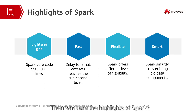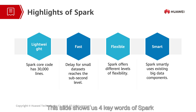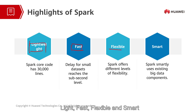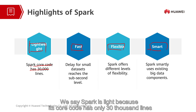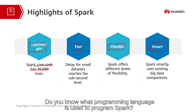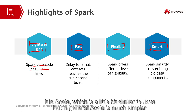Then, what are the highlights of Spark? This slide shows us four key words of Spark: lightweight, fast, flexible, and smart. We say that Spark is light because its core code has only 30,000 lines. Do you know what programming language is used to program Spark? Yes, it is Scala, which is a little bit similar to Java, but in general, Scala is much simpler.